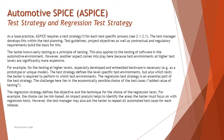The regression strategy defines the objective and technique for selecting regression tests, because not everything can be executed at any point in time. You need to decide how many regression tests will be executed when changes happen, and selecting them requires a precise strategy. For example, the choice can be risk-based — only high-priority risk cases are executed — and you should follow either a breadth-first or depth-first approach, whichever fits best. Impact analysis will help identify the areas a tester must focus on. The test manager may also ask the tester to repeat all automated test cases for each release. It is critically important to know how exactly the strategy can be created for overall testing as well as for regressions.